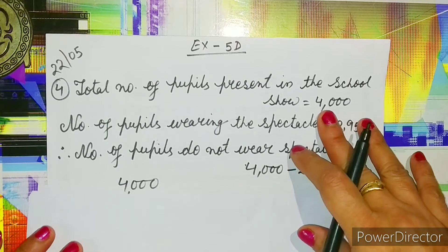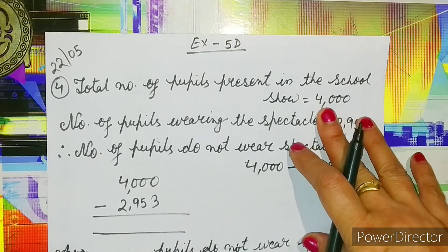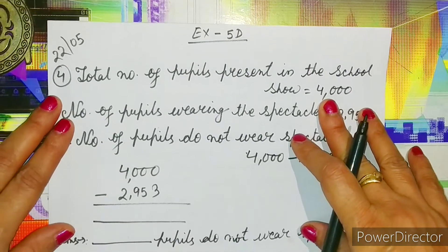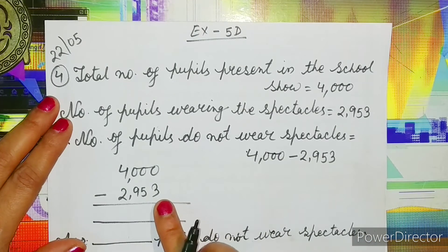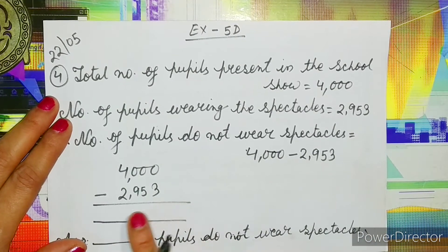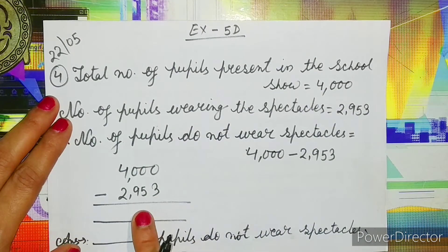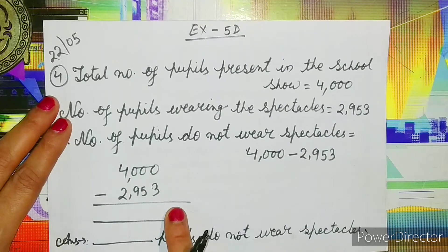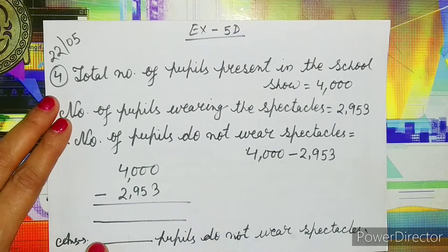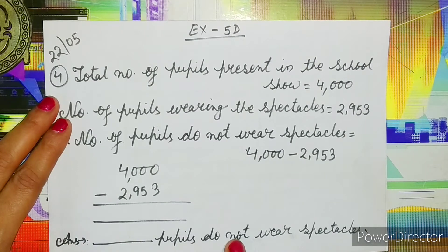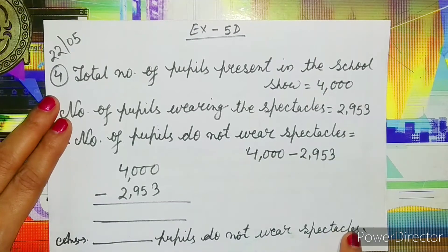We will subtract both terms, and students, you have to do the subtraction. After that, write the answer here. Whatever answer comes, the same number you have to write in the blank space while writing the answer: pupils do not wear spectacles.